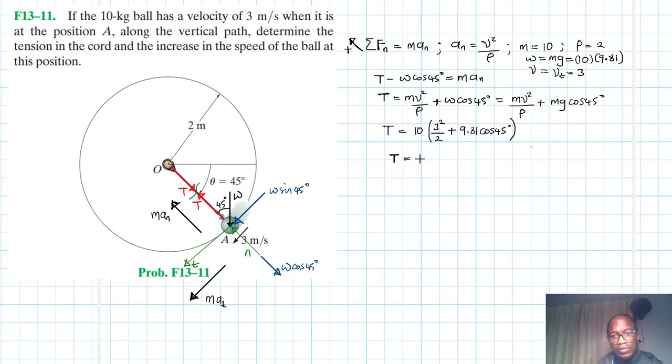And then we'll say plus g is just 9.81, so we'll have 9.81 cos 45. So with this we can therefore calculate our T which will just give us the following: 3 squared divided by 2 plus 9.81 cos 45 times 10. So T is just equal to 114.38 newtons.